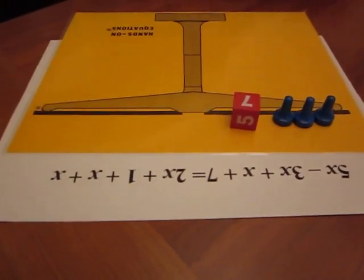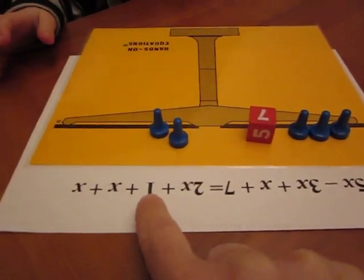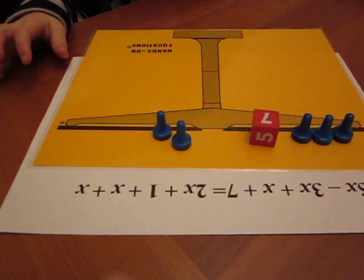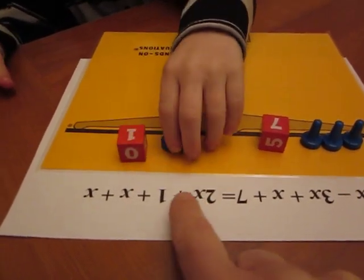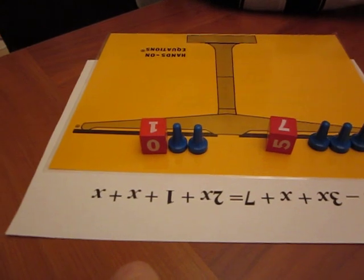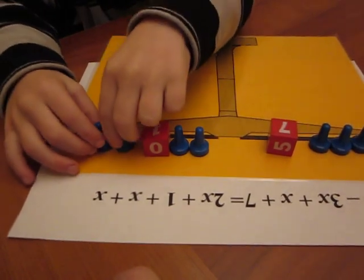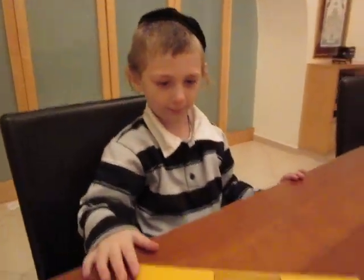Plus a seven, okay. Two X's. Two X's, yes. A one, okay. And another X. And you have two more X's. Okay, good.